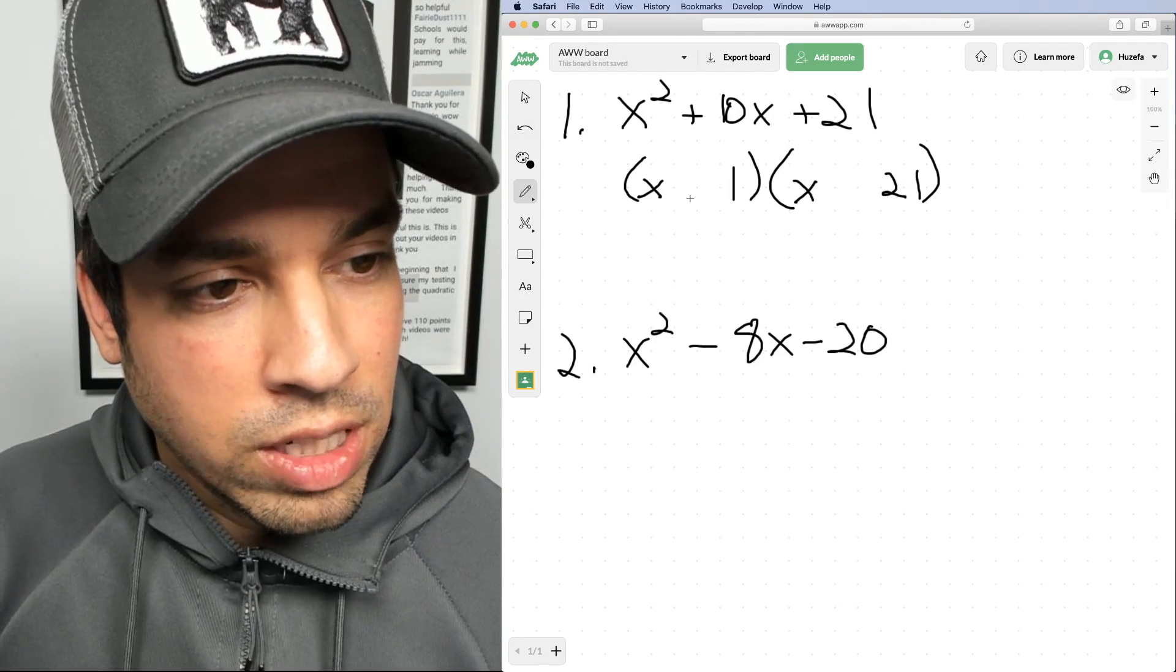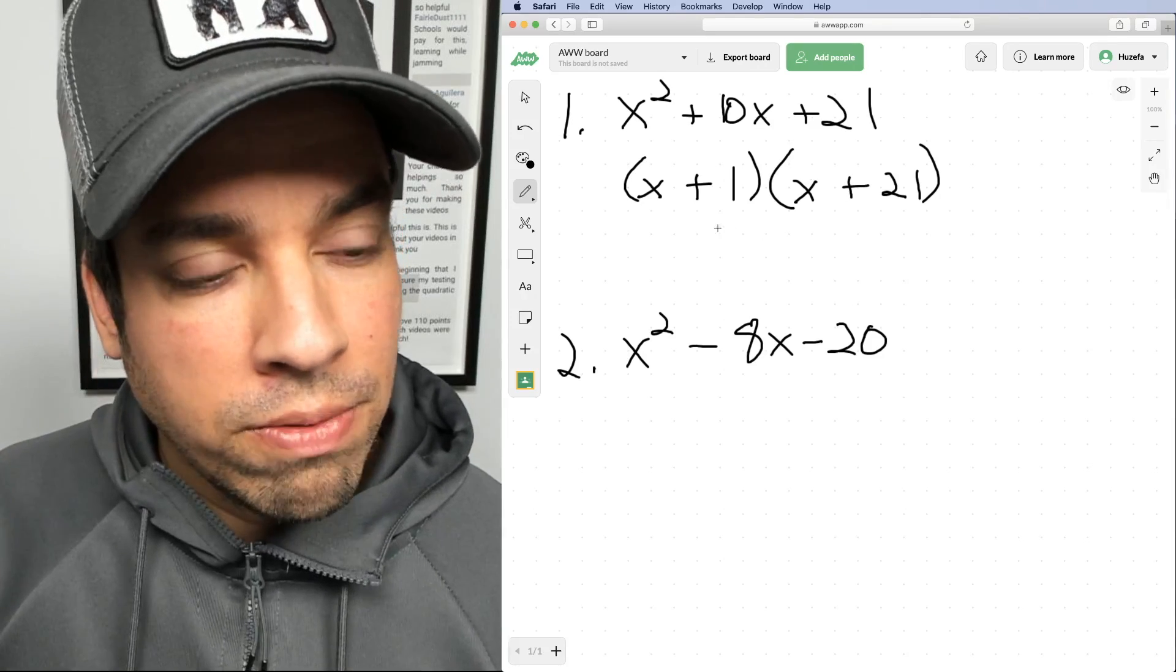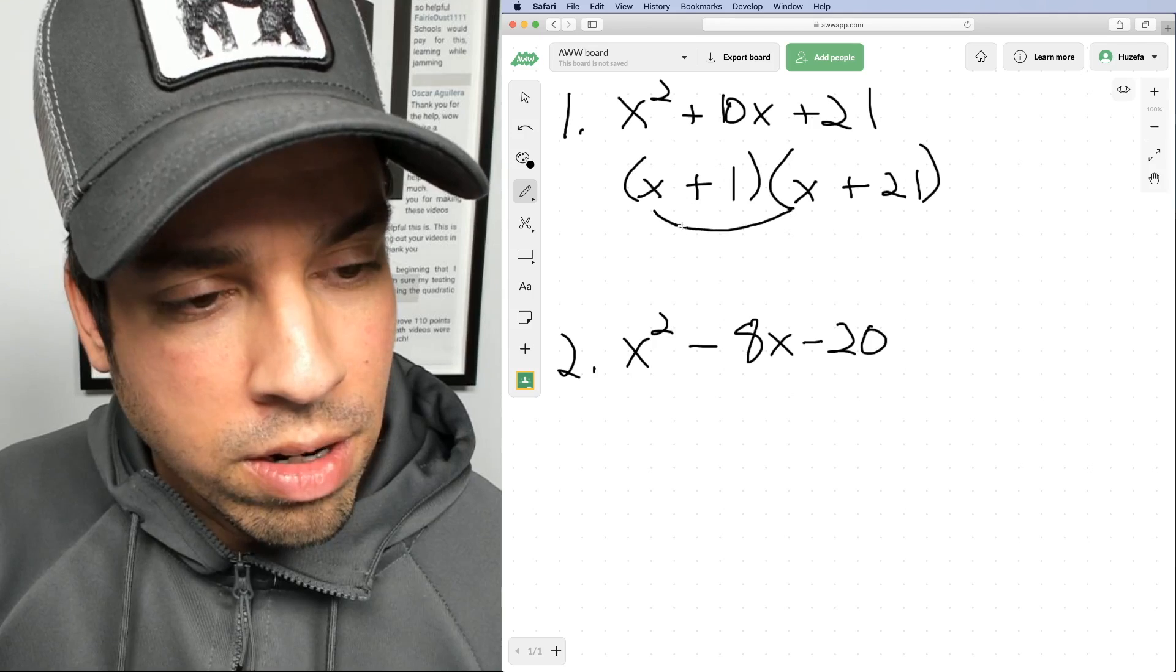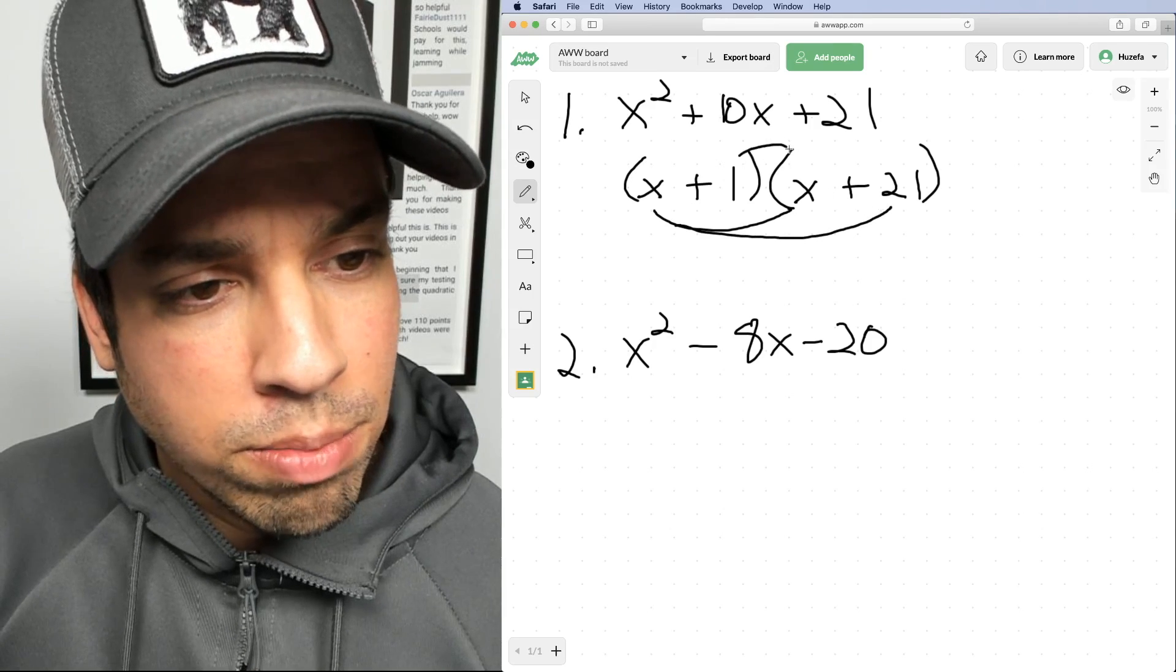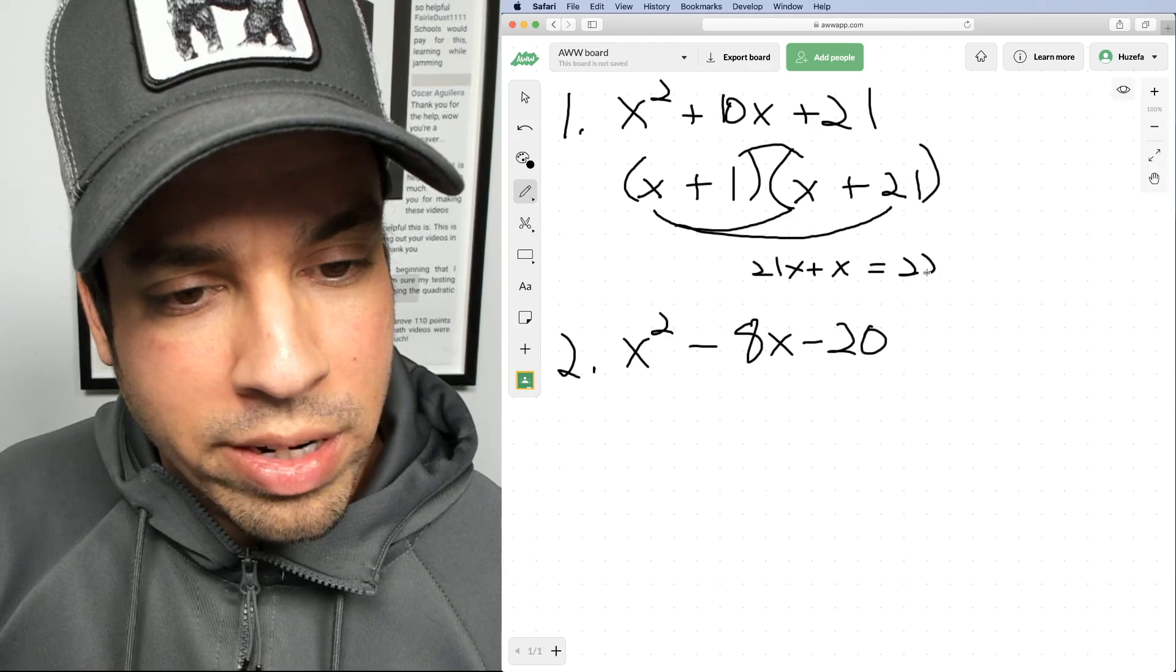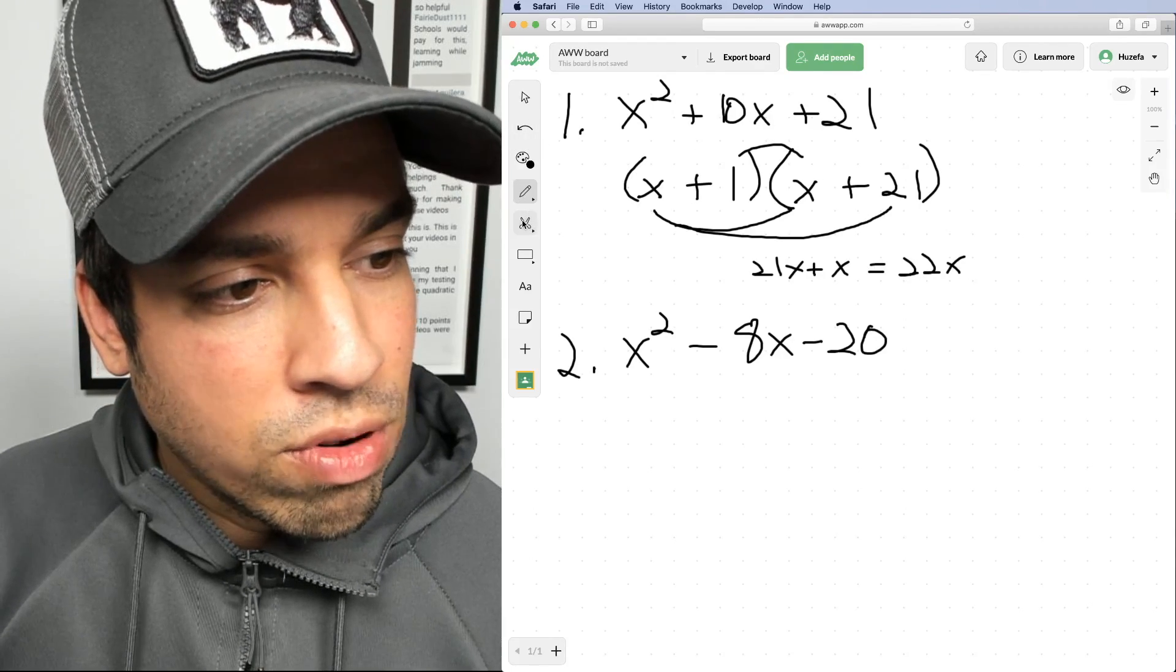Since everything's positive, we can make it plus plus. But the problem with this is, if I actually FOIL it out, I get x squared—that's great—but then I get 21x plus 1x, which is 22x. That's not what we have here. We have 10x, so that's a problem.